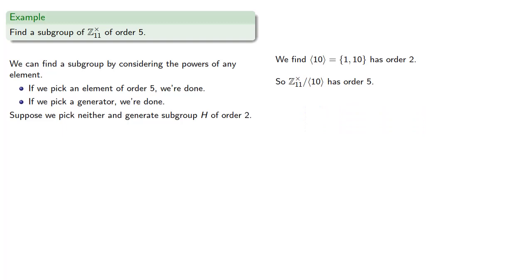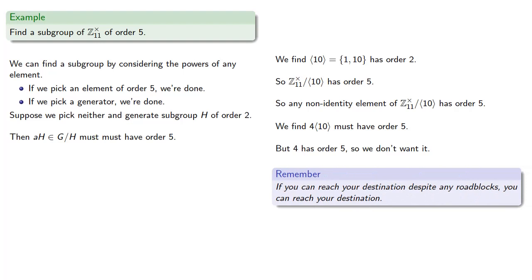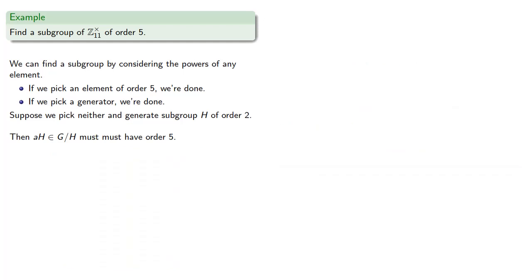Any non-identity element of our quotient group must also have order 5, so AH in G mod H must have order 5. We'll pick a random coset: {4, 10}. We find that {4, 10} has order 5, but 4 itself has order 5 — so we don't want it. Because, stop me if you've heard this: if you can reach your destination despite any roadblocks, you can reach your destination. So let's throw up a roadblock that keeps us from taking that path. The coset {2, 10}: we find it has order 5, but 2 itself does not have order 5 — 2 to the 5th is not congruent to 1.